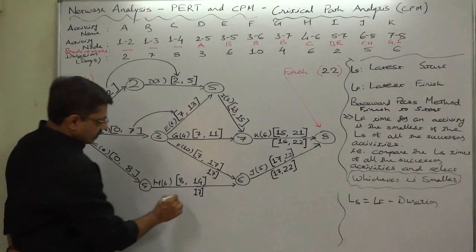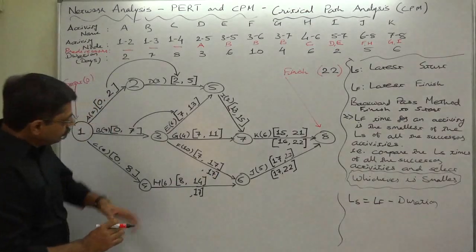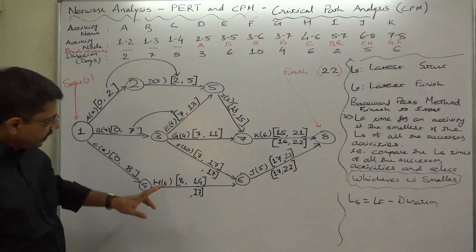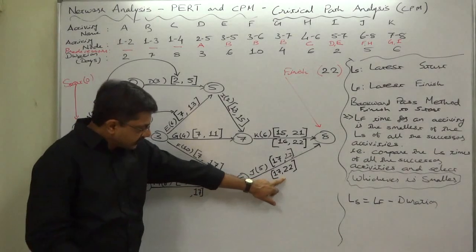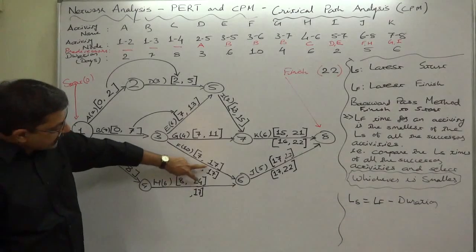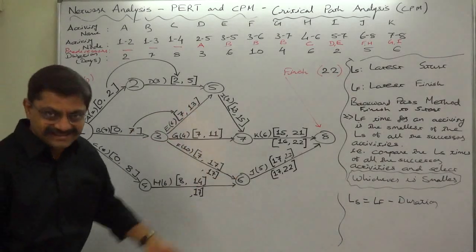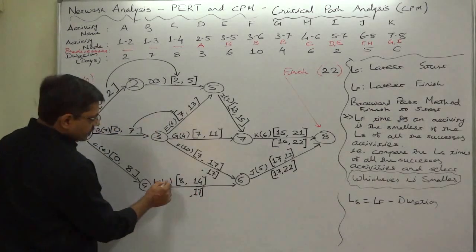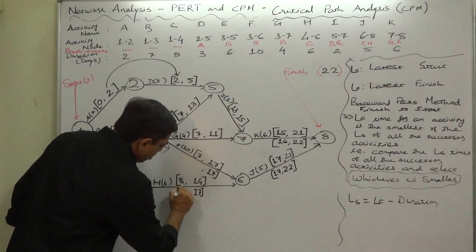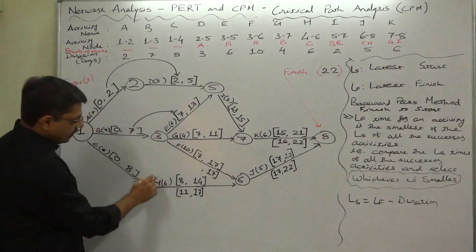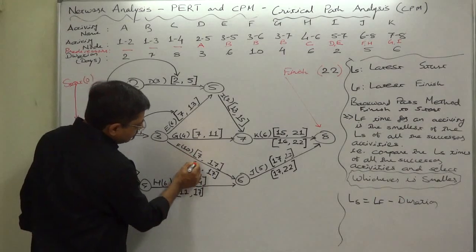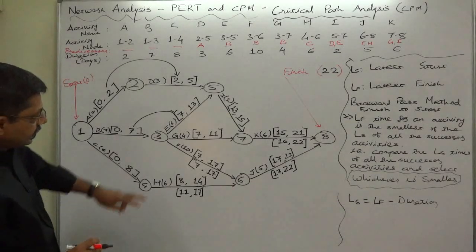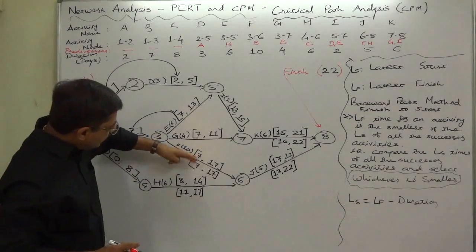These two activities have only one successor so there is no confusion. The latest start time of the successor becomes the latest finish time of the predecessor or predecessors. Latest start time equals latest finish time minus duration: 17 minus 6 = 11 is the latest start time of H; 17 minus 10 = 7 will be the latest start time of F.